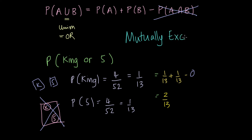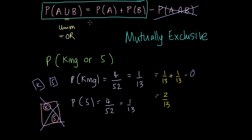Cases where we cannot have our events A and B occurring at the same time are known as mutually exclusive. For mutually exclusive events, the intersection — the probability of A and B occurring — is 0, and hence the formula is going to be just the probability of A plus the probability of B. They cannot happen at the same time.